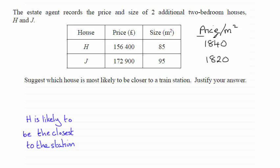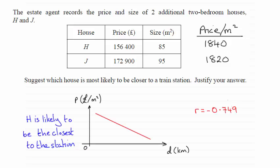Now to put this in some perspective, what I've thought of doing is drawing up some axes of that price per square meter, which was the variable P, plotted against the distance from the station, D kilometers.